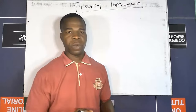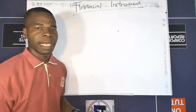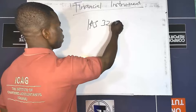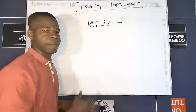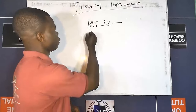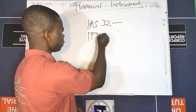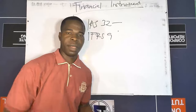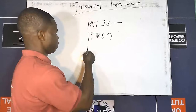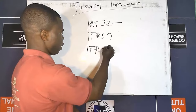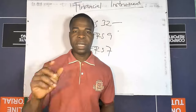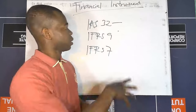The first standard is IAS 32, which talks about the classification and presentation of financial instruments. You also have IFRS 9, which talks about the recognition and measurement of financial instruments. And the last one, IFRS 7, outlines the disclosure requirements of financial instruments in the books of the entity.